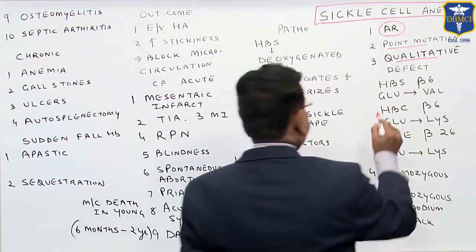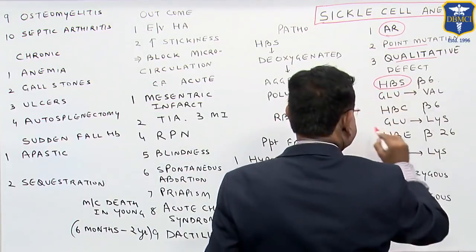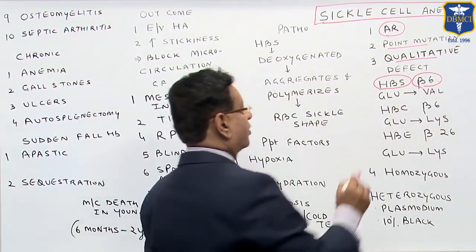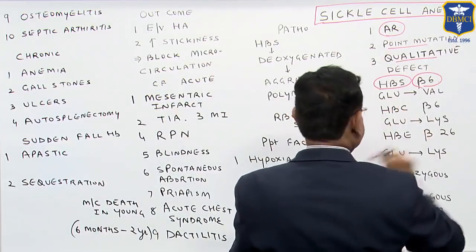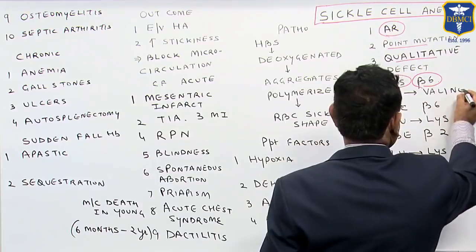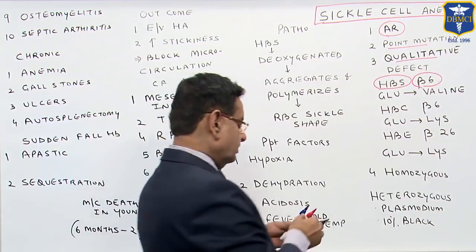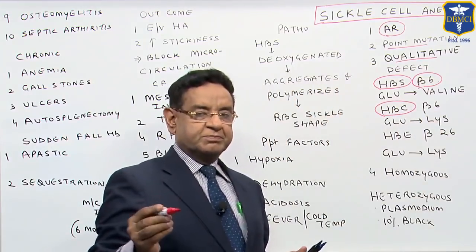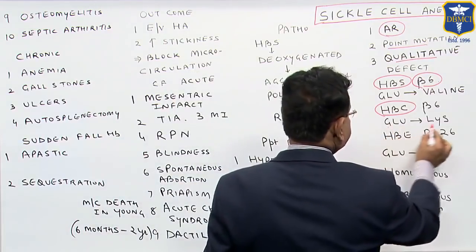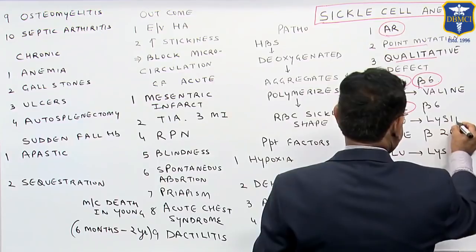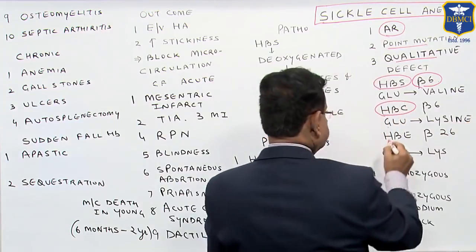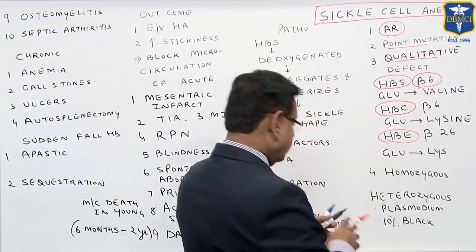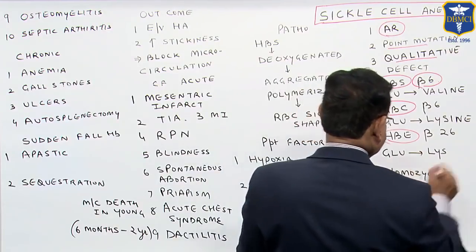What is the problem? We have hemoglobin S — in the beta chain, at the sixth position, glutamate is replaced by valine. Similarly, we have hemoglobin C — again in the beta chain at the sixth position, glutamate is replaced by lysine. And we have HbE, where in the beta chain at the 26th position, glutamate is replaced by lysine.